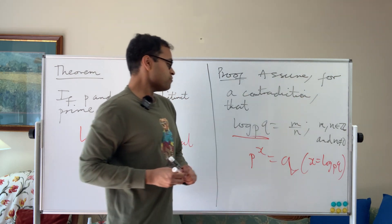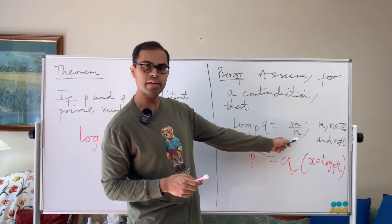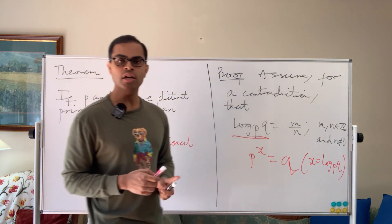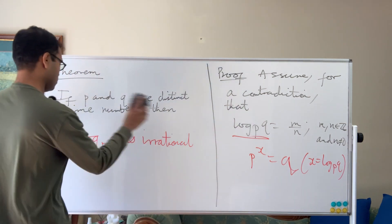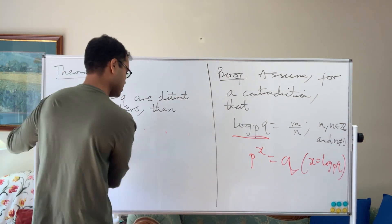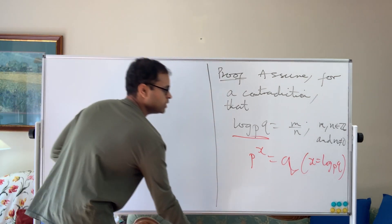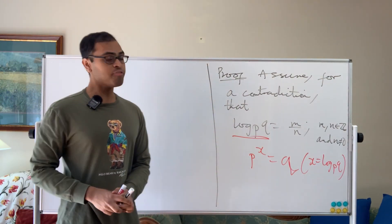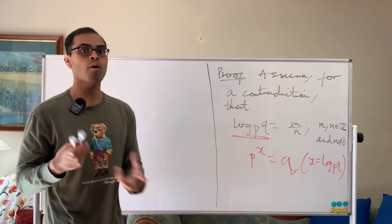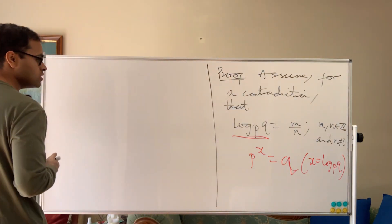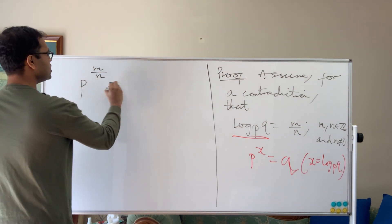Now, well, if p to the x is equal to q, we get some information now. So we know that we're claiming, we're assuming for a contradiction it's rational. So we know that if we take m over n, that's x, we know p to the m over n is equal to q. So let's erase this out here. So this is the theorem. We'll now get something absurd. And of course, we're going to have to use the fact p and q are distinct primes, because of course, if p and q are the same, then log to the base p of p is just 1, because p power 1 is p. So we're going to have to use that at some point.